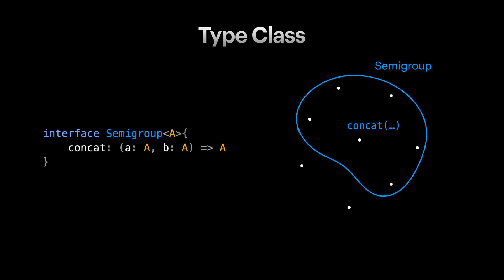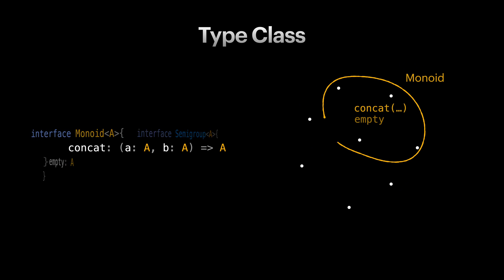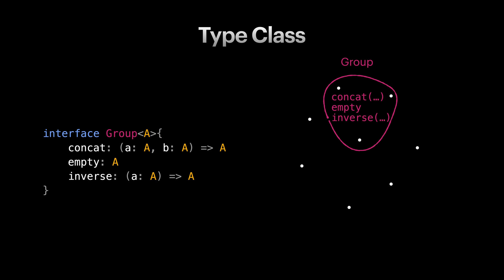Semigroup is a magma in which the concat operation is associative. This requirement lets us know that if we have a sequence of applying semigroup concat operations, the order of applying them is not important. Monoid is a semigroup that has an empty value in which concatenating any value in that monoid with that empty value leads to a same value. Monoid gives us an identity value that acts neutral when applying concat.